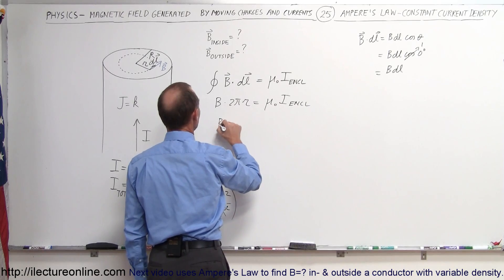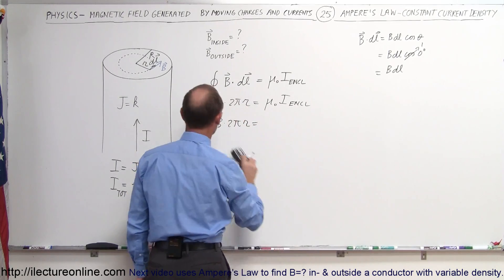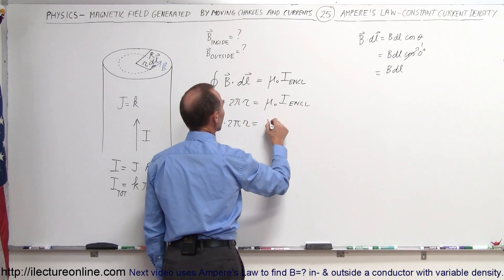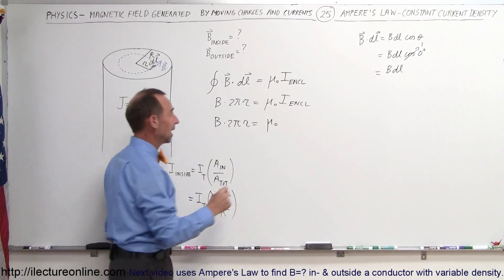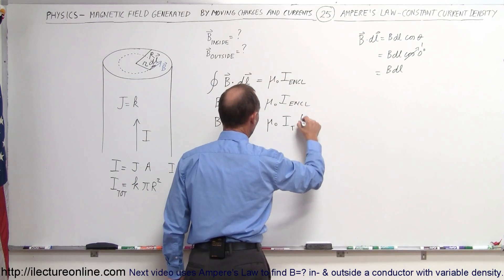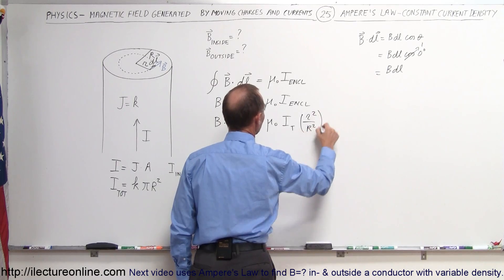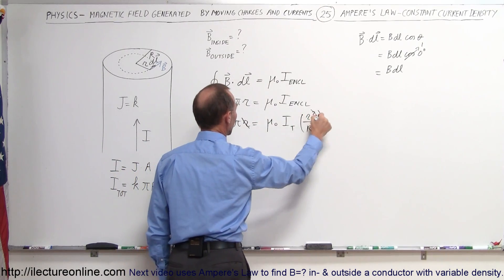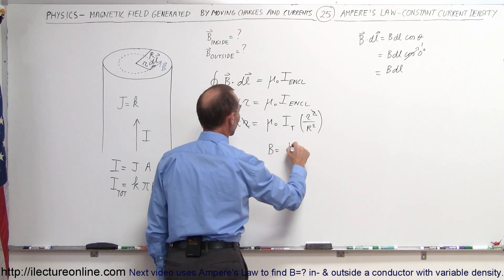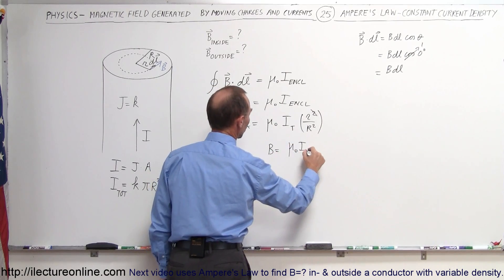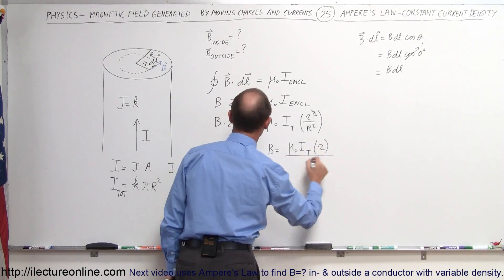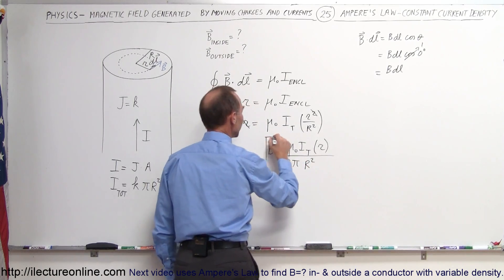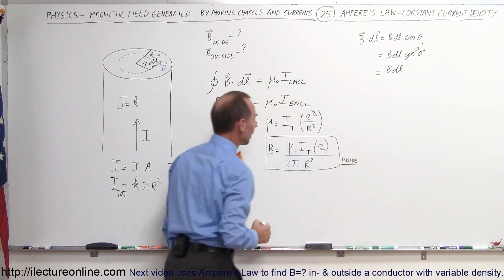So we can write that B times 2πr equals μ₀ times I enclosed, which equals I_total times r² divided by R squared. Simplifying, the r in 2πr cancels one factor of r from r², and we get the magnetic field strength inside: B equals μ₀ times I_total times r, divided by 2π times R squared. That is the magnetic field strength inside the conductor.